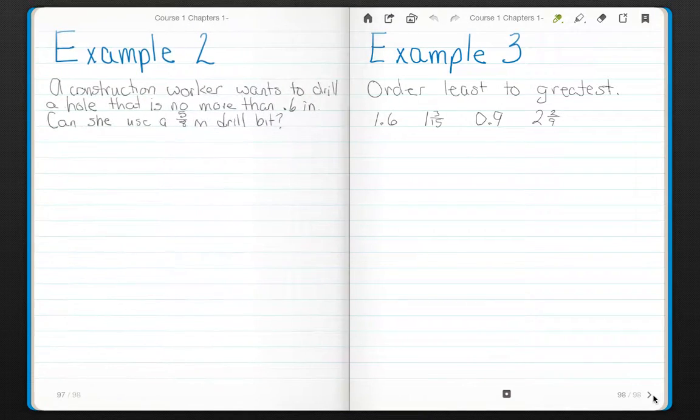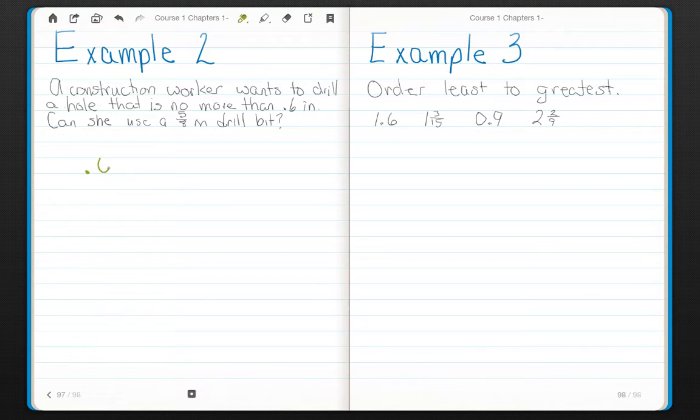Example 2. A construction worker wants to drill a hole that is no more than 6 tenths of an inch in diameter. Can she use a 5 eighths inch drill bit? Well, no more than 0.6 inches, but she only has a 5 eighths inch drill bit. We can't compare the two because they are not the same. So the easiest thing to do is to take this 5 eighths and convert it into a decimal.